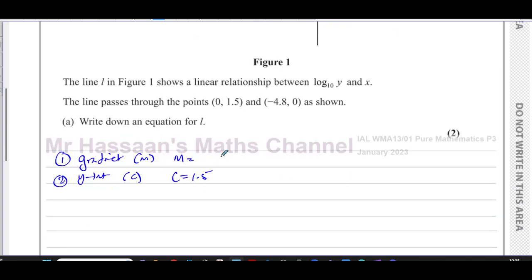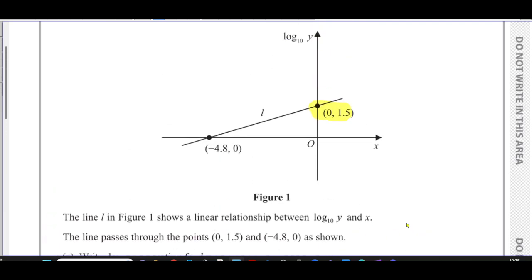And m is the gradient of the line. To find the gradient of the line, you have to find the difference between the y-coordinates, which is 1.5 minus 0, divide that by the difference between the x-coordinates, which is 0 minus -4.8. So the gradient is 1.5 over 4.8, which is basically 15 over 48. Divide by 3, that's going to be 5 over 16.